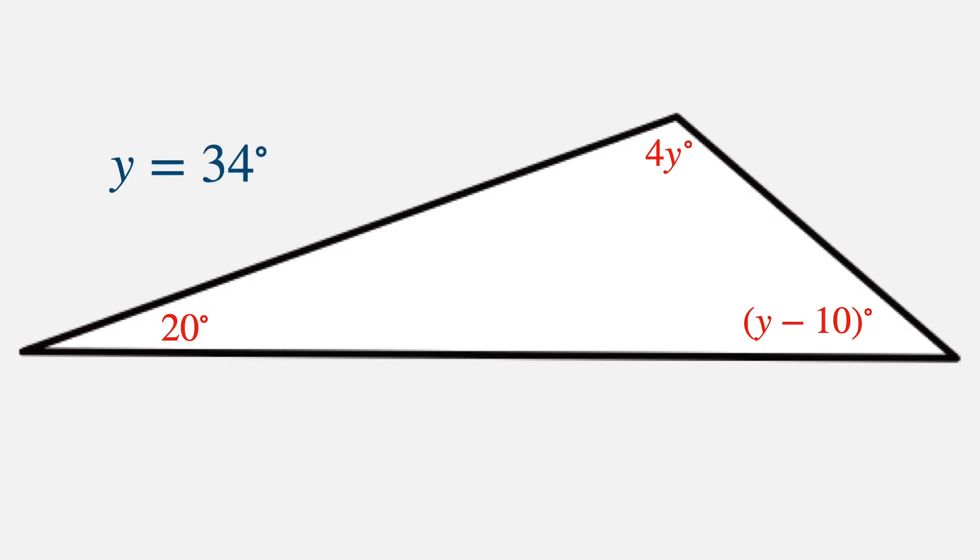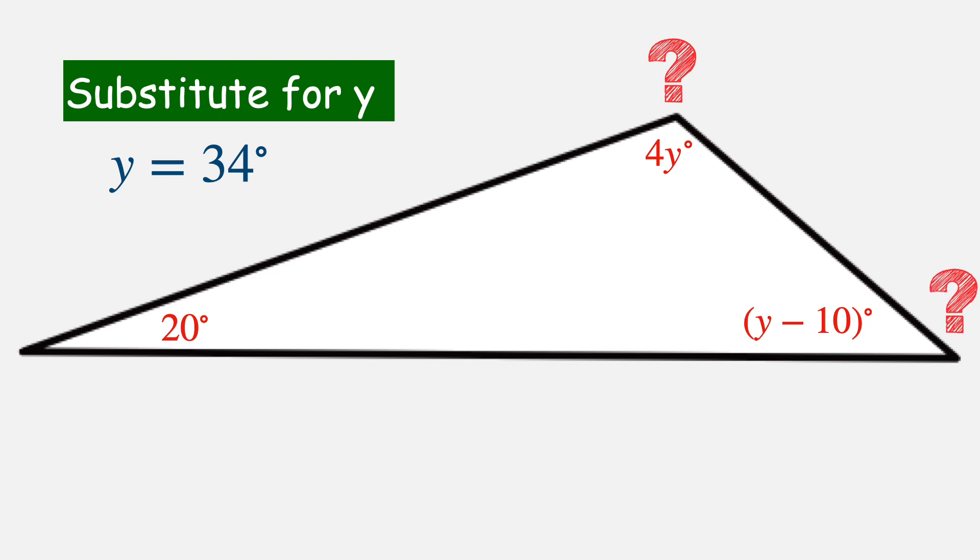Now that I know that y is 34 degrees, I'm ready to substitute that value of 34 in place of y for the two expressions that were given for the missing angle measures. I'll start with the top angle. This expression is 4y. And I'll substitute the 34 for y to get 4 times 34, which equals 136. So this top angle is 136 degrees.